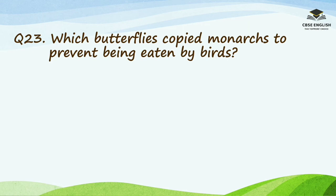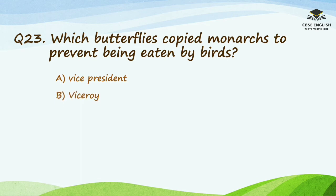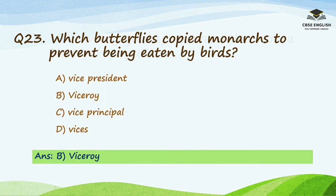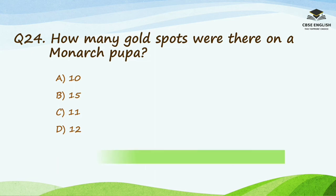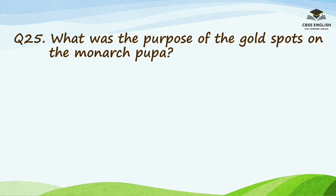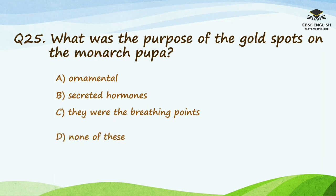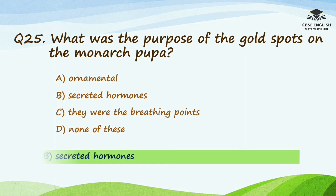Question number twenty-three: which butterflies copied monarchs to prevent being eaten by birds? Options are viceroy, monarch, all of the above, or none of the above. The correct answer is viceroy. Question number twenty-four: how many gold spots were there on a monarch pupa? Options are 10, 15, 11, or 12. The right answer is 12. Question number twenty-five: what was the purpose of the gold spots on the monarch pupa? Options are ornamental, secreted hormones, they were the breathing points, or none of these. The correct answer is secreted hormones.